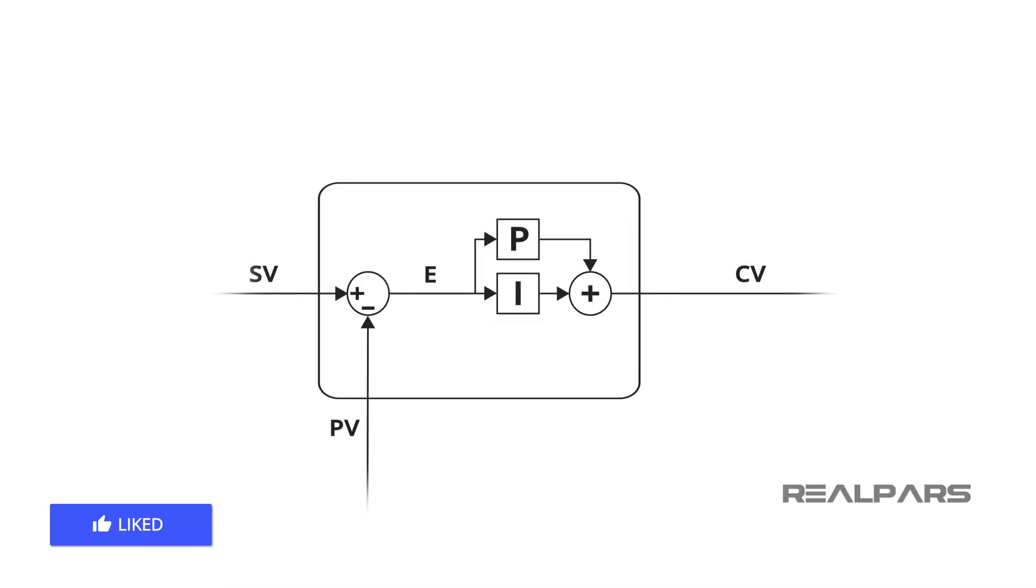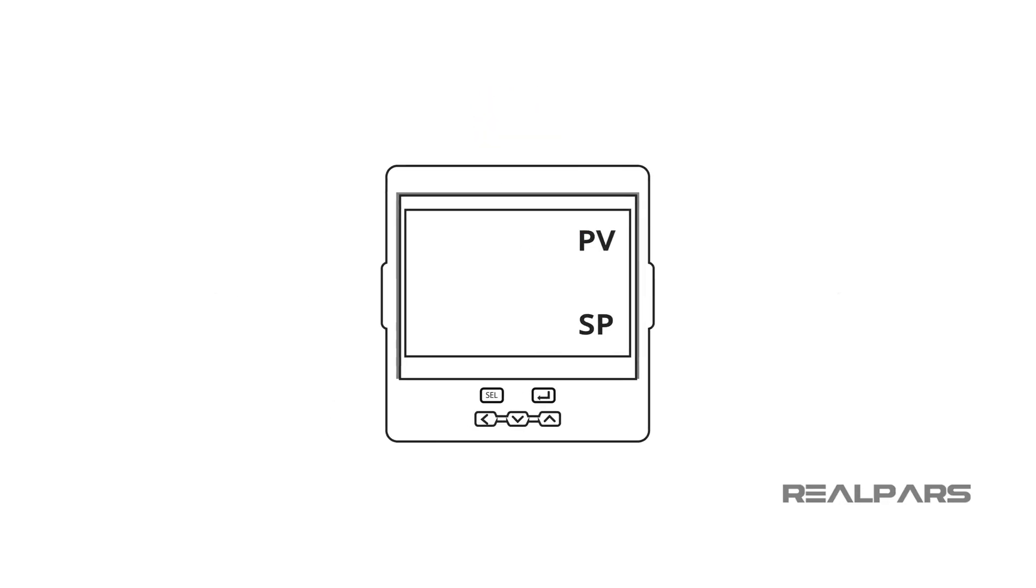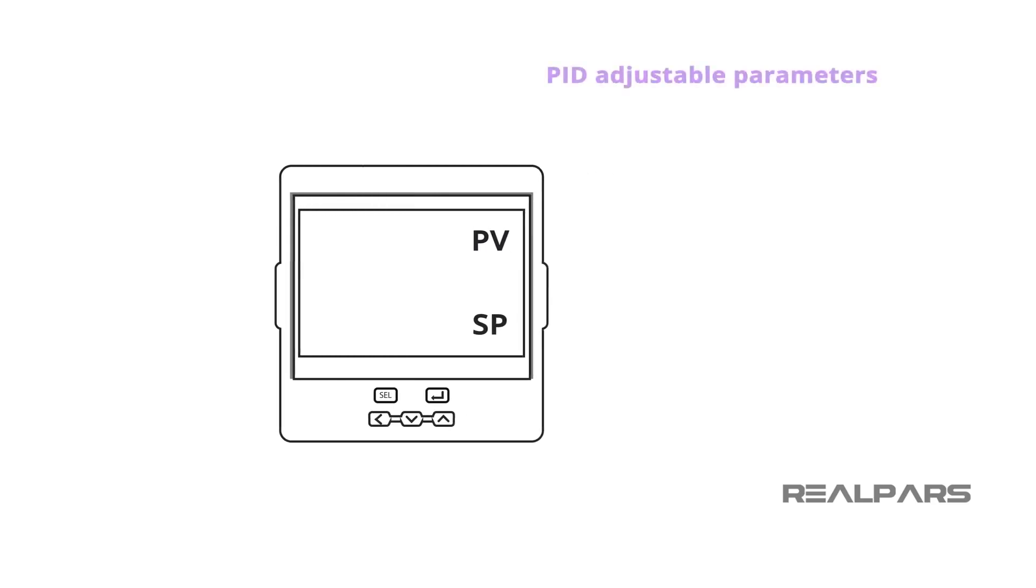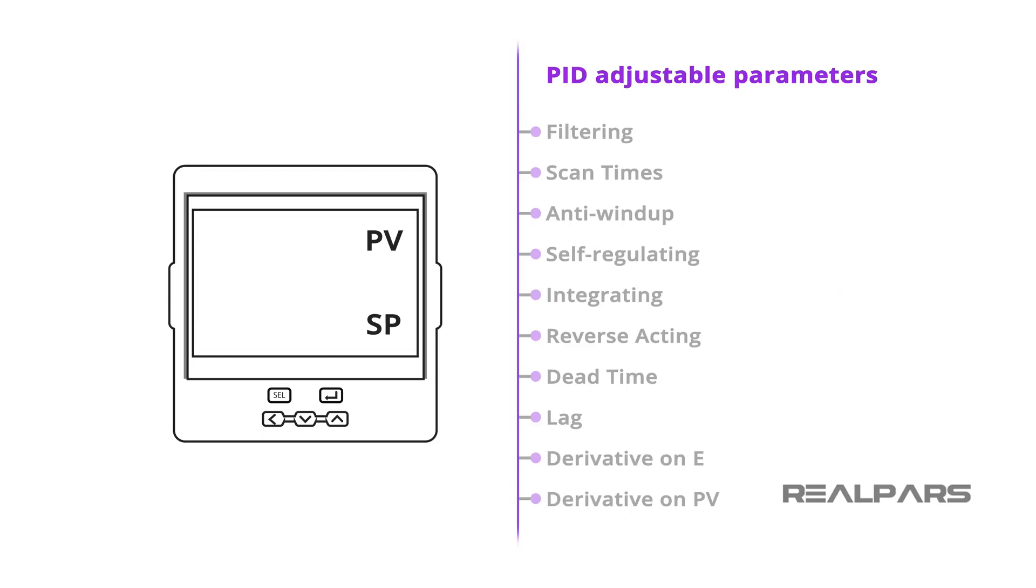The most commonly used controller is the PI. Most processes can be well served with this type of control. P and PID controllers are occasionally used while PD controllers are rarely used. PID controllers are very sophisticated devices, with likely many adjustable parameters. The process and algorithm types can also vary.